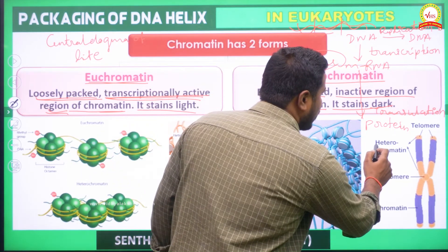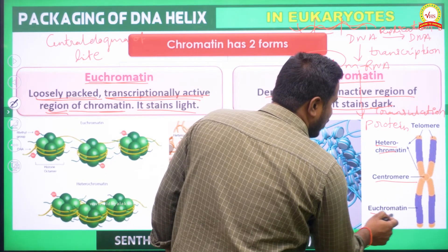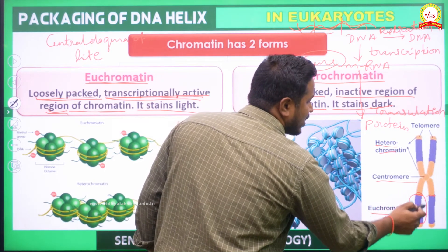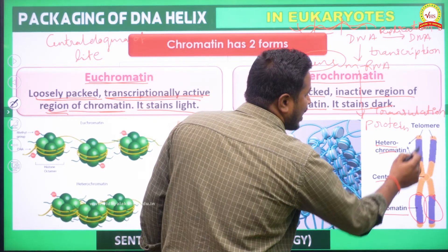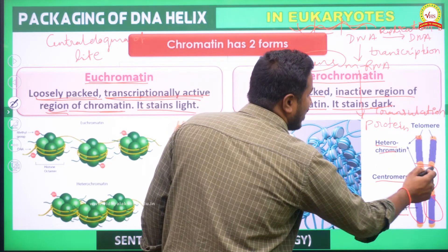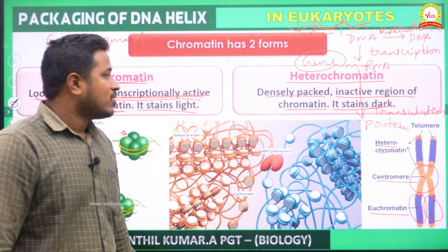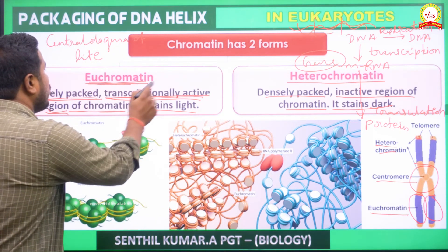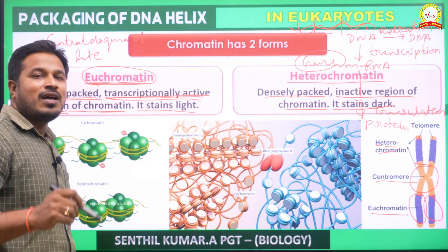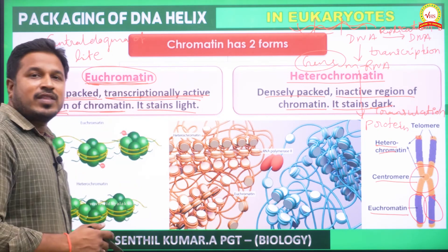You can identify heterochromatin near the centromere and telomere regions. Euchromatin is the transcriptionally active region, while heterochromatin — found near the centromere — is the inactive region of the chromosome. Euchromatin contains information to express, which is why it is transcriptionally active.